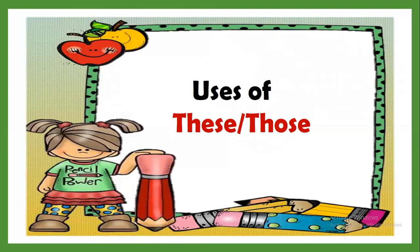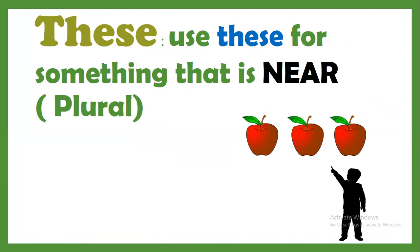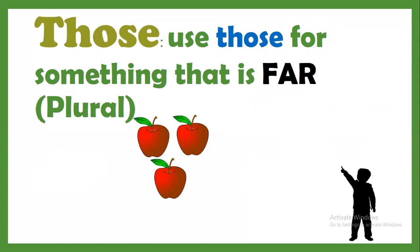Now let's revise our uses of these and those. Use these for something that is near — when the objects are near to us, many objects are near, so we use these. Use those for something that is far. When many objects are far from you, you have to point and we can use those.